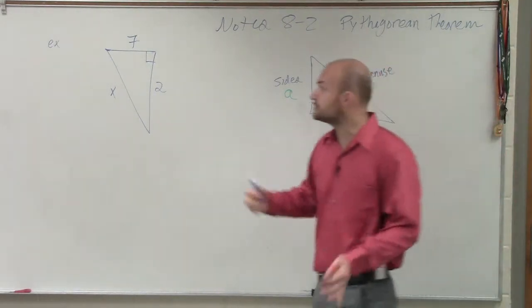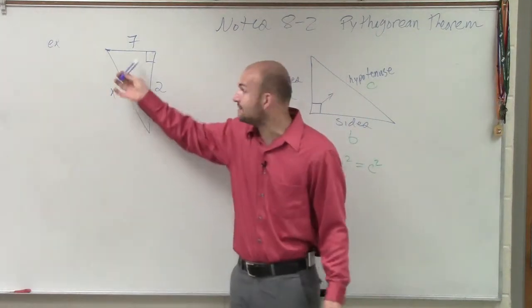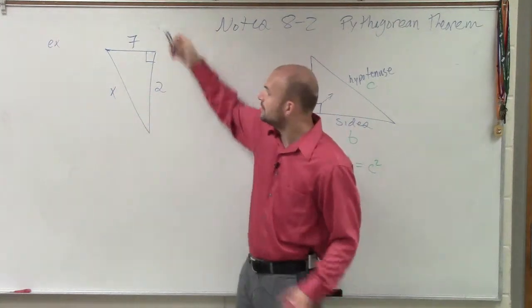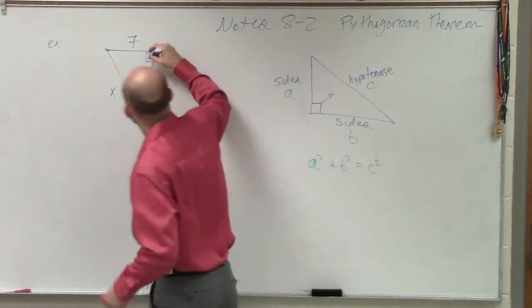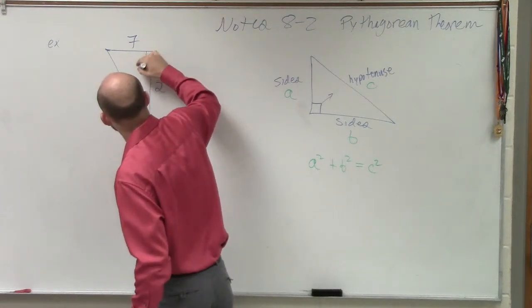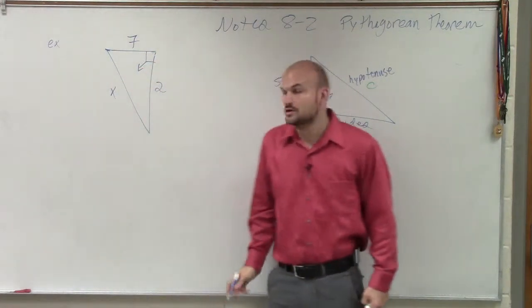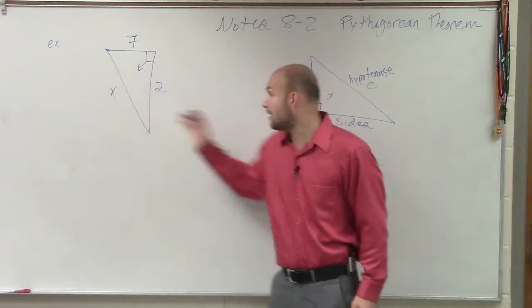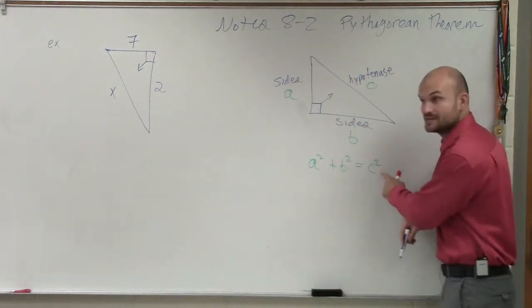So what I need to do is I need to determine, well, what are my sides? What do I have here, and what do I not have? Well, remember, your hypotenuse is always directly across from your right angle. So therefore, do I know what the hypotenuse is? No, I don't know what c squared is.